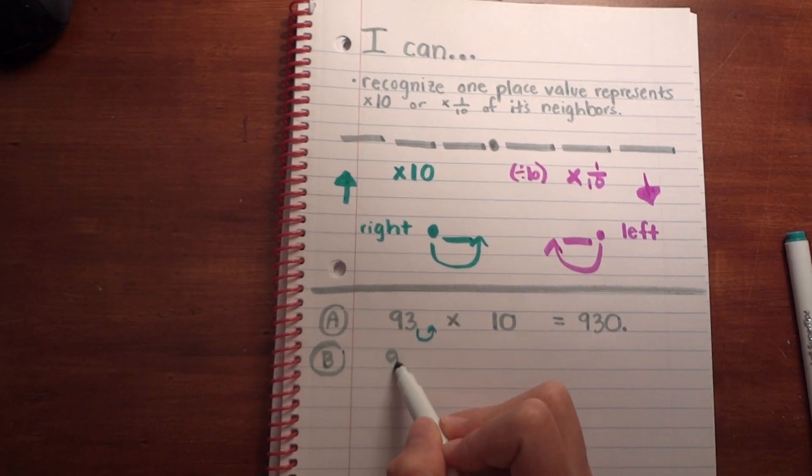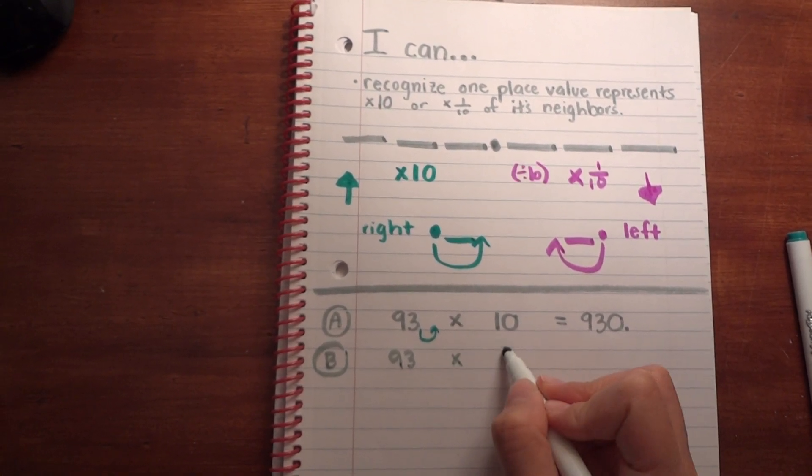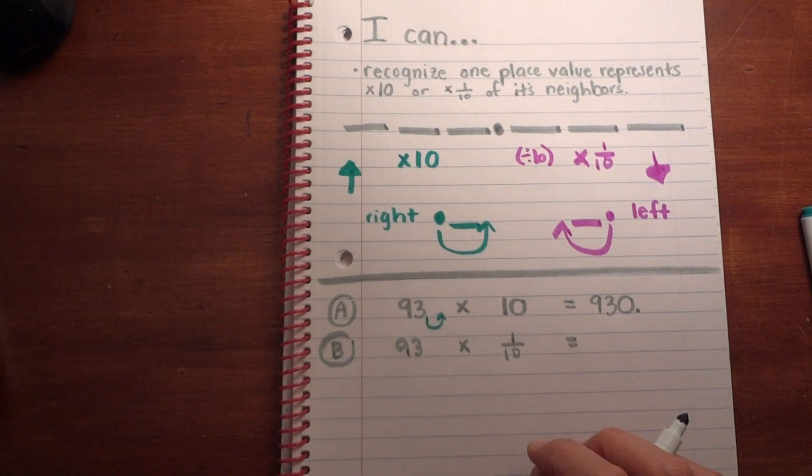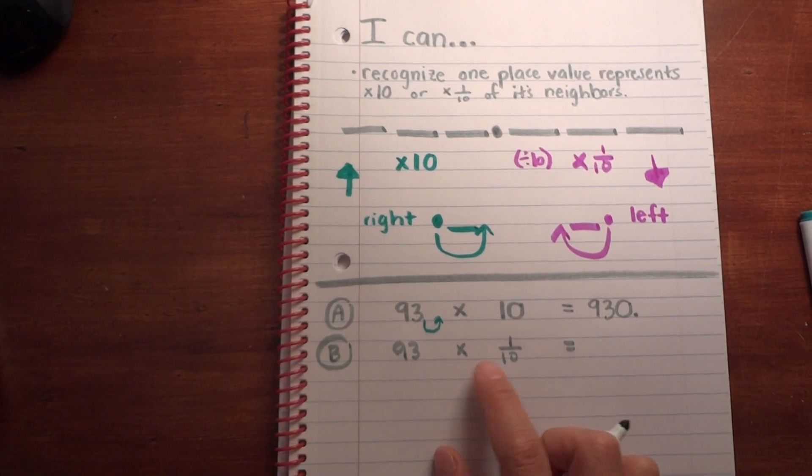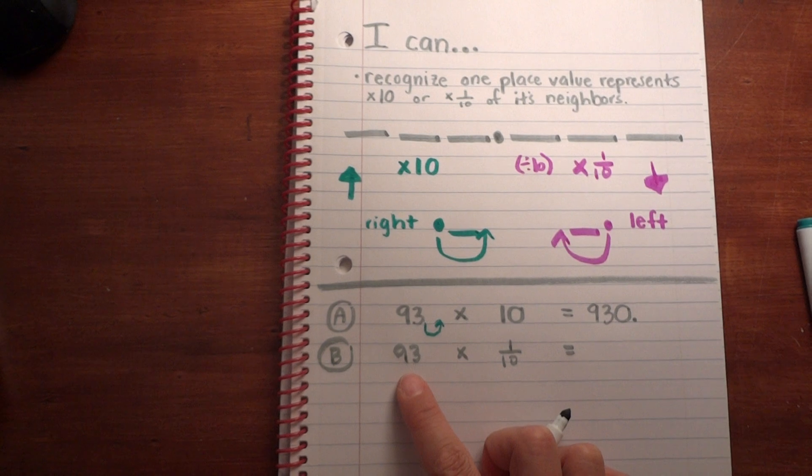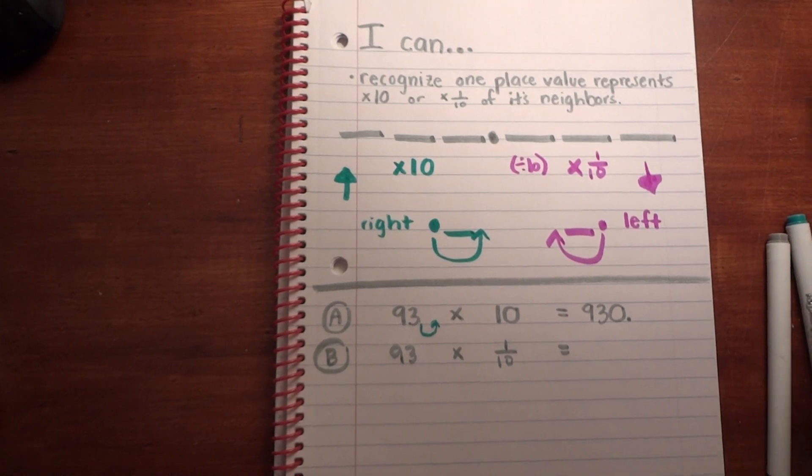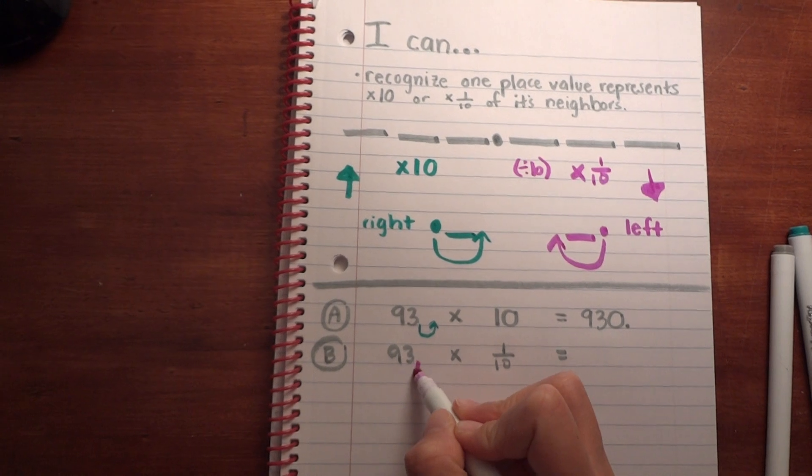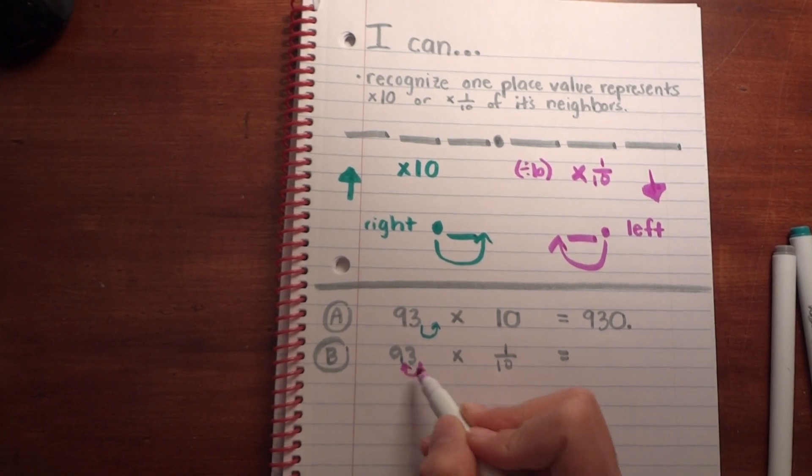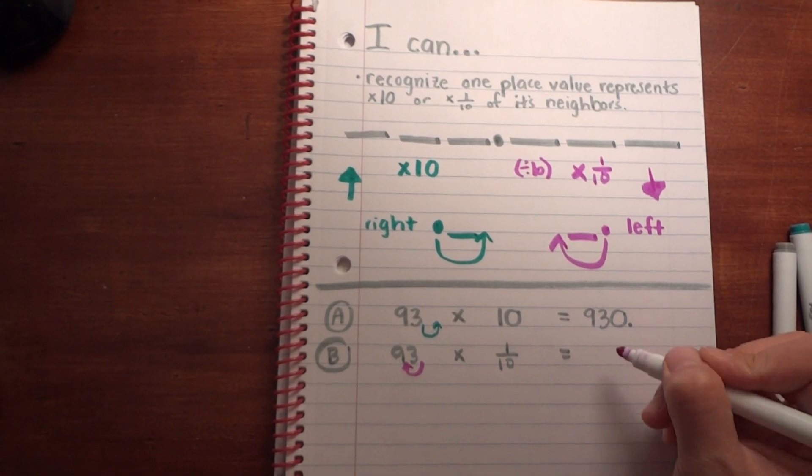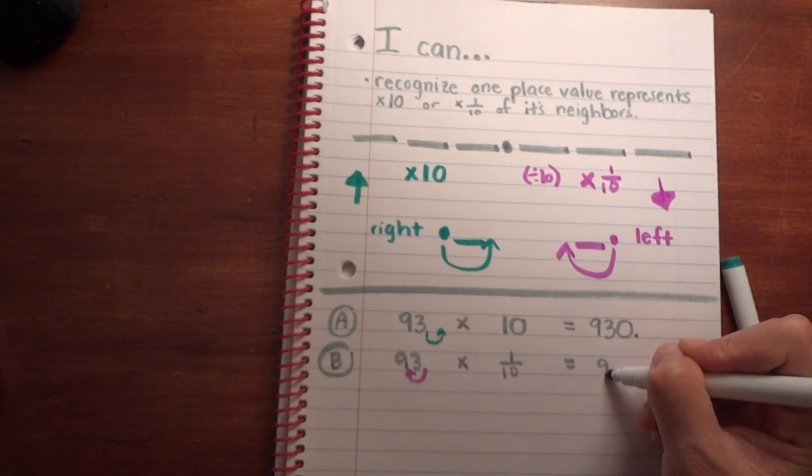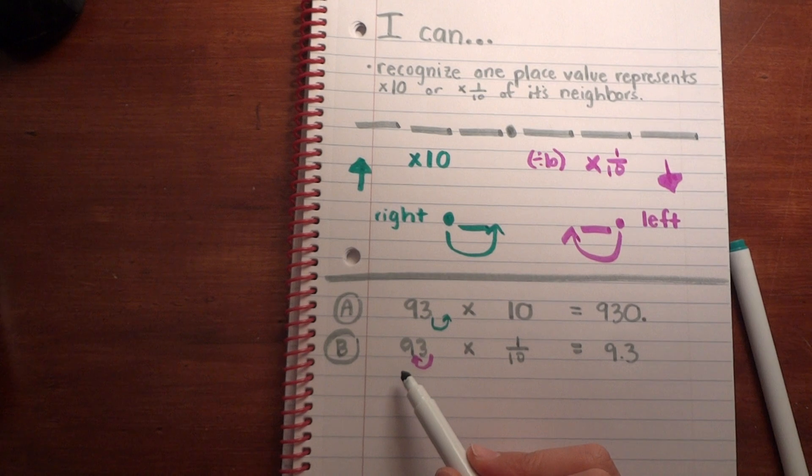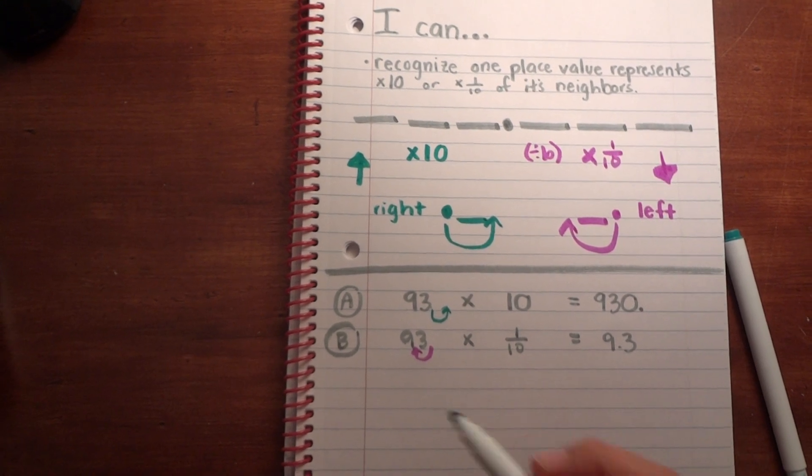Let's try B: same number, 93 times one-tenth. Before you start to solve it, think about that—you're multiplying by one-tenth, taking one-tenth of 93, decreasing its value. Take that decimal, move it to the left one place value, and you get nine and three-tenths. Nine and three-tenths is one-tenth of 93, decreasing its value.